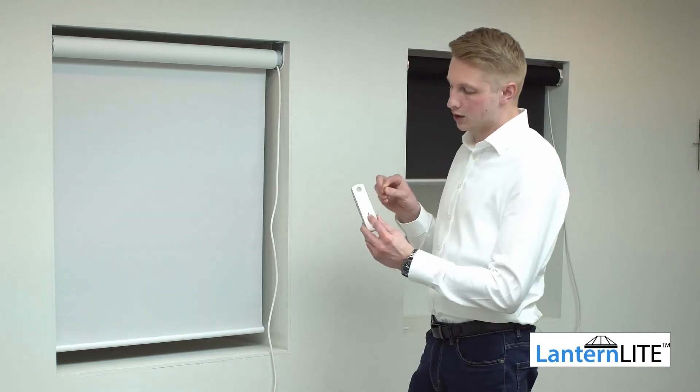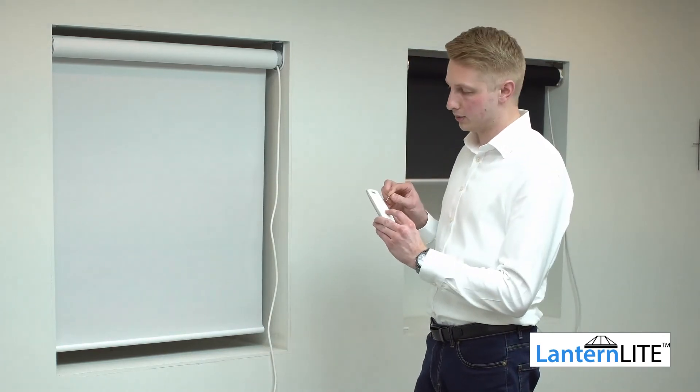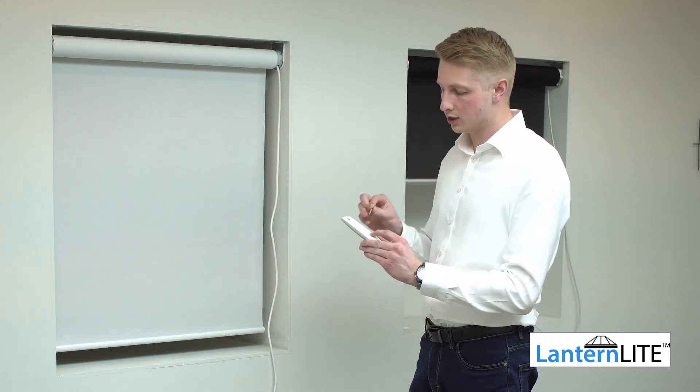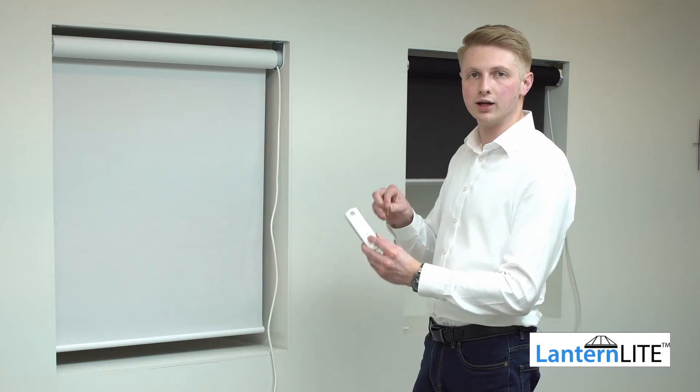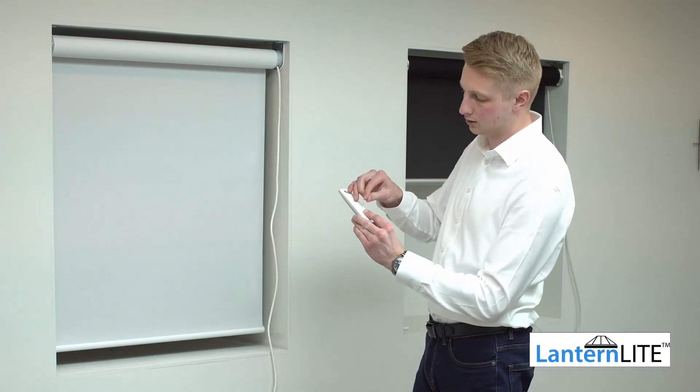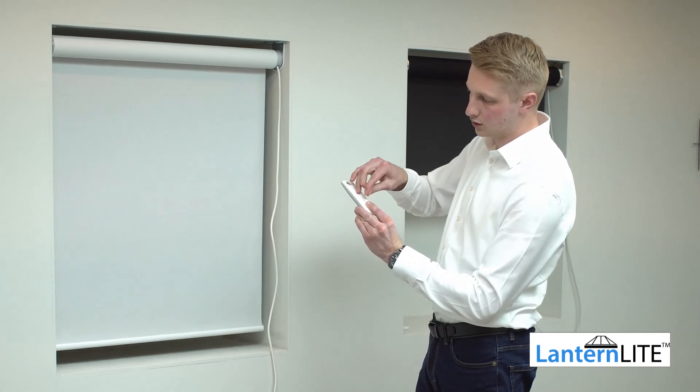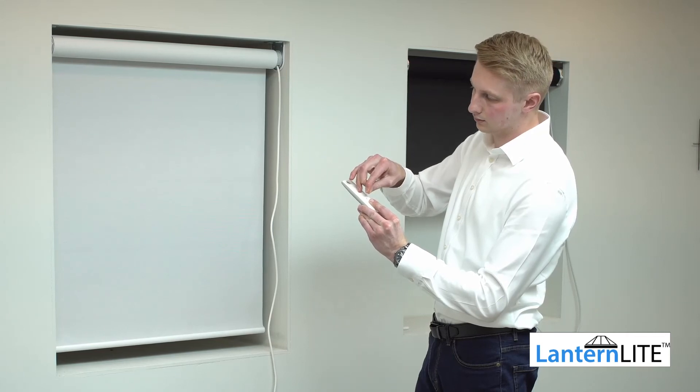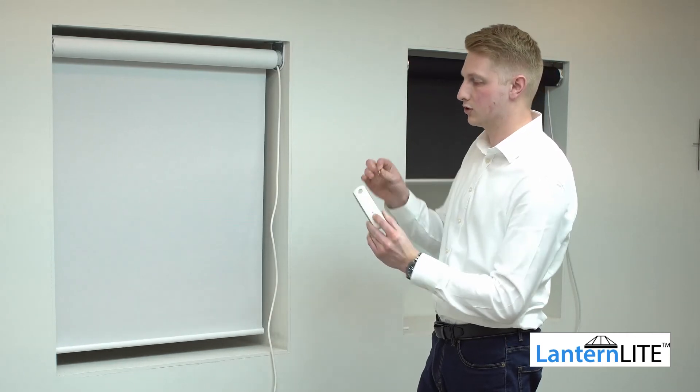Now at this point, I need to press and hold the programming button until it shunts twice. As soon as I press the programming button, it will do one shunt. But I must keep holding it until it does the second shunt. Otherwise, the reset procedure won't be complete. There's your first shunt. I need to keep holding until it does a second shunt. There's the second shunt.